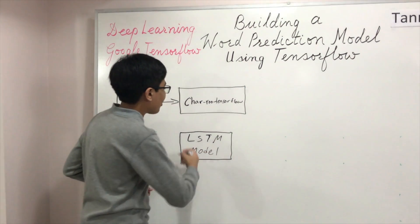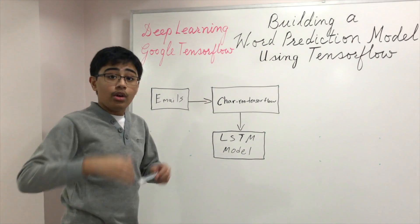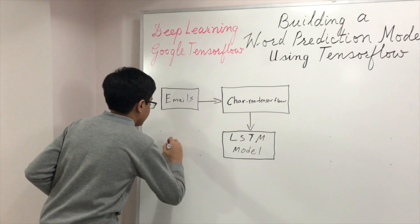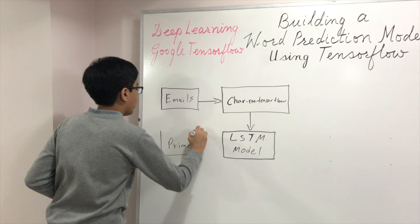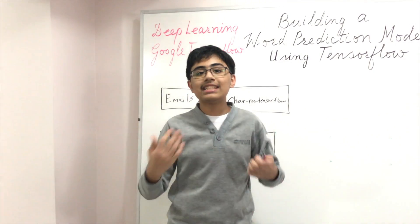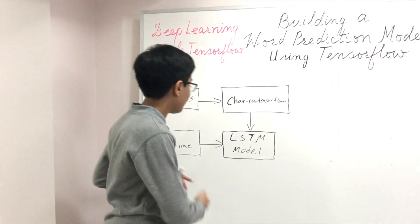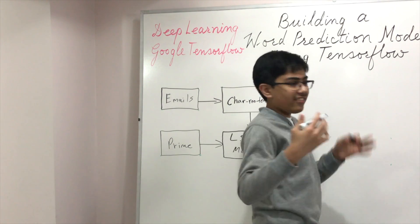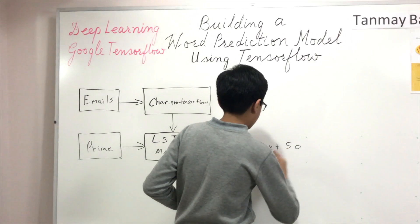The char-rnn-tensorflow will output this new LSTM TensorFlow model. After the model has been outputted, we're ready to feed data into it and see what it predicts. You feed in what's called a prime — the prime depicts the starting text or seed of the output. Essentially, the prime will be your partial sentence. For example, I would pass 'thank you very much for', that sentence goes into the LSTM model, and the LSTM model then outputs the next 50 or so characters that it believes you would write.